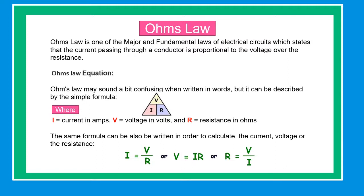Ohm's Law Equation: Ohm's Law may sound a bit confusing when written in words, but it can be described by the simple formula where I equals current in amps, V equals voltage in volts, and R equals resistance in ohms. The same formula can also be written in order to calculate the current, voltage, or resistance.